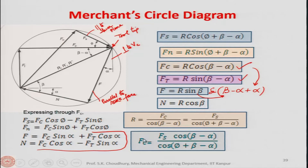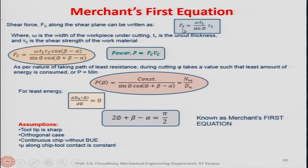Fc can be found through Fs. Fs is the shear force parallel to the shear plane, expressed as the shear plane area times the shear stress: Fs = (W · T1 / sin φ) · τs, where the area of the shear plane is W·T1/sin φ.